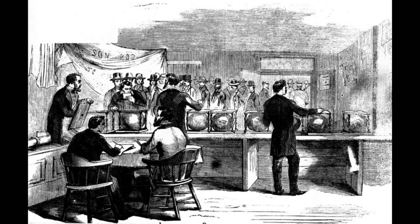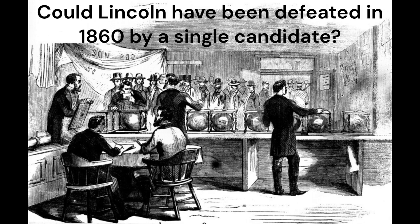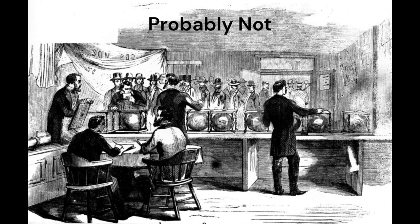Greetings, my name is Kotow and this is the first of a series of videos concerning the road to war for the U.S. Civil War. This video will attempt to answer the hypothetical question of whether if Lincoln faced a single unifying opponent he could have been defeated in the 1860 election. As the title implies, it is highly unlikely, but there are some potential paths that would give this imaginary opponent a chance.